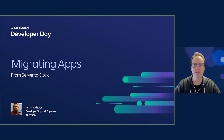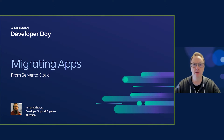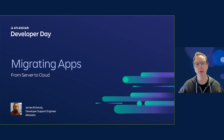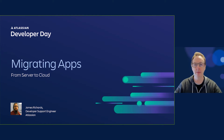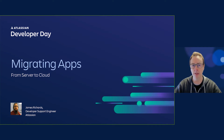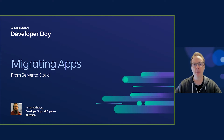I joined Atlassian in 2015 in the support team as a senior support engineer for Confluence Server. In 2019, I moved into engineering to join the Confluence Cloud Migration Team and help build the Confluence Cloud Migration Assistant. In 2020, seeing a need, we created the App Migration Team and developed the App Migration Platform, which I'll be talking about today. In 2021, I combined both my support and engineering skills by moving into a developer support role, specializing in supporting partners building their app migration code.